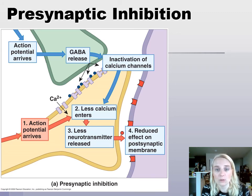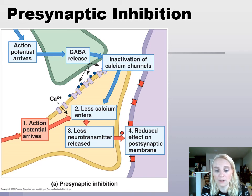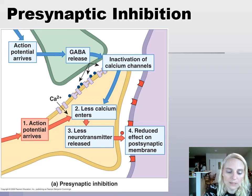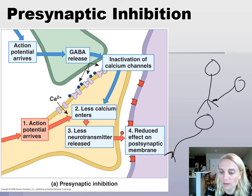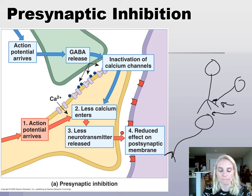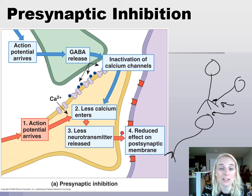GABA blocks those calcium channels. So when the action potential arrives, if GABA is already there, less calcium comes in, less neurotransmitter is released, and there's a smaller graded potential on the purple postsynaptic membrane. This third neuron regulates what happens at the presynaptic neuron — this is presynaptic inhibition, because we are reducing the amount of neurotransmitter being released from the yellow presynaptic cell.